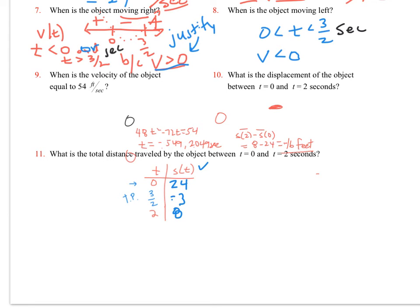So I get 24 here, I get negative three here, and I'm going to get eight here. Remember, I'm plugging into S of T, not V of T. If I plug into V of T, I'm going to get zero for this turning point. And, you know, because my velocity is going to be zero. Now, what we want to do is find the total distance between each one of these.